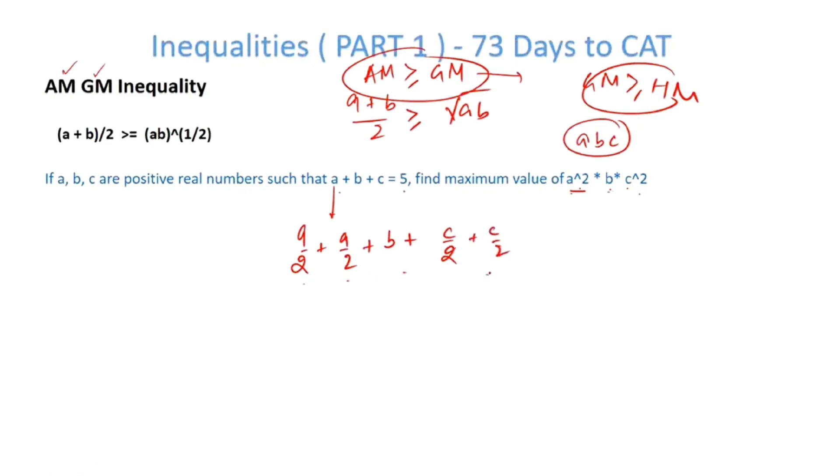So now there are 5 units. So arithmetic mean will be divided by 5. What will be geometric mean? Basically multiplication of everything raised to the power 1 by 5. So a by 2 into a by 2 is a squared by 4 into b into c squared by 4. You see the magic here. I have got a²bc².